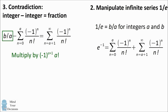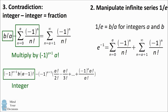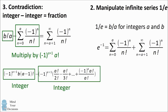When we multiply B over A by A factorial, we end up with B times A minus 1 factorial, and then we have the negative 1 to the A plus 1. Every single term in it is an integer — the negative 1 term, B, and A minus 1 factorial are all integers. We then multiply A factorial by all of the alternating terms going up to A. Every denominator is always less than A factorial, so each of these terms is an integer, and therefore the alternating sum of integers is also an integer.